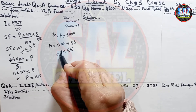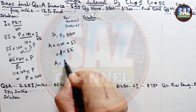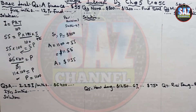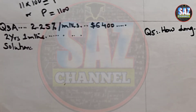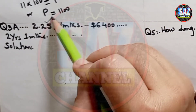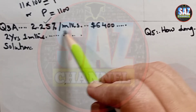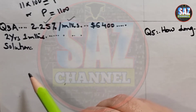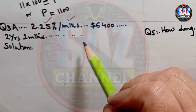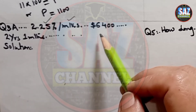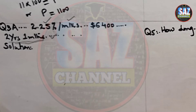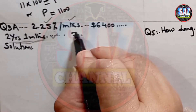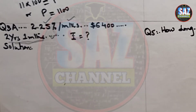I hope you are clear about that question. Now, question number 3: if a bank charges 2.25% per month simple interest on personal loans, and John borrows $6,400 for a period of 2 years and 1 month, find the total interest he has to pay. We have to find the total interest paid for the borrowing of $6,400 at an interest rate of 2.25% per month.